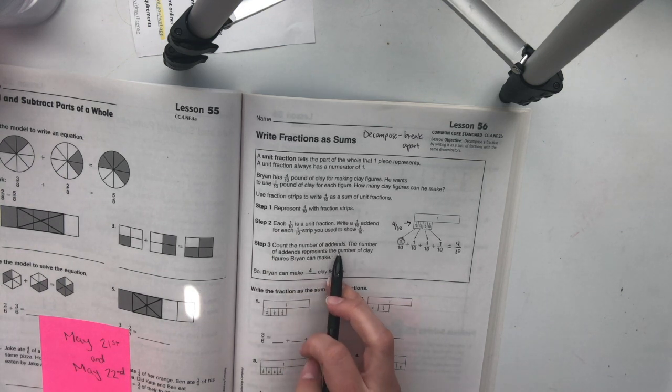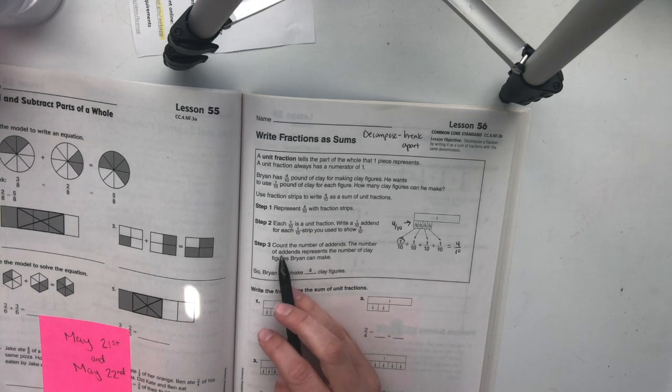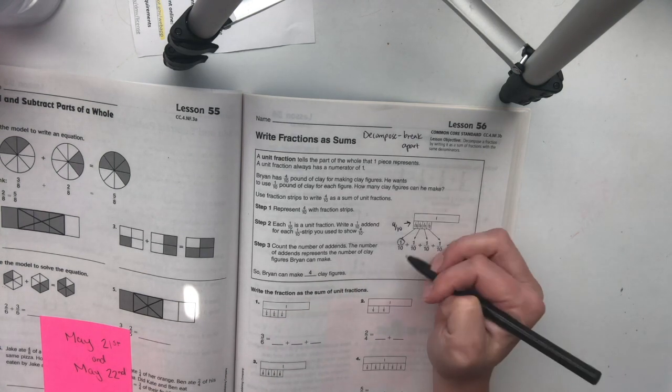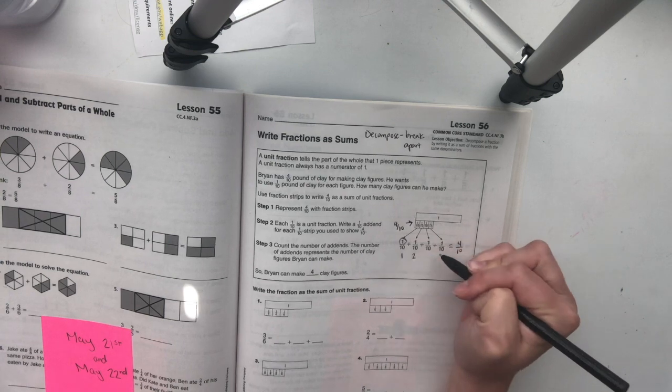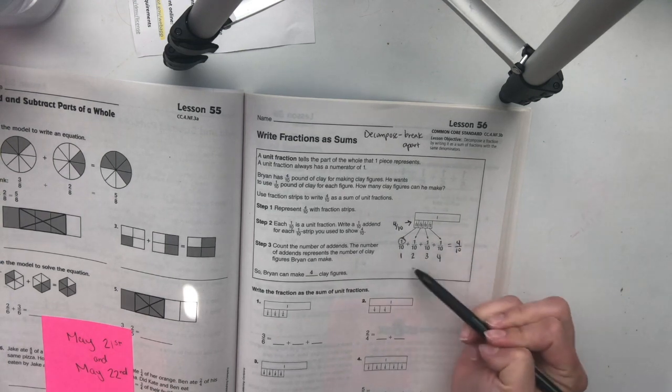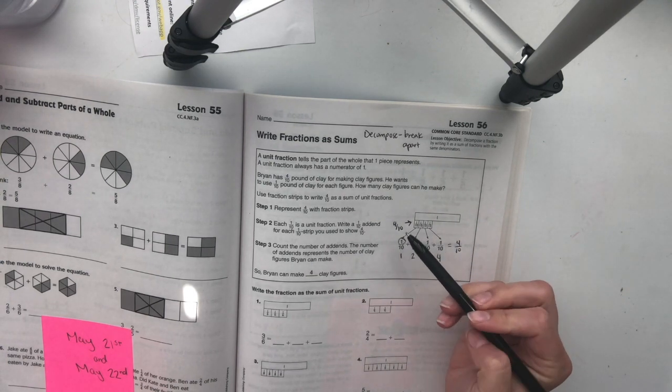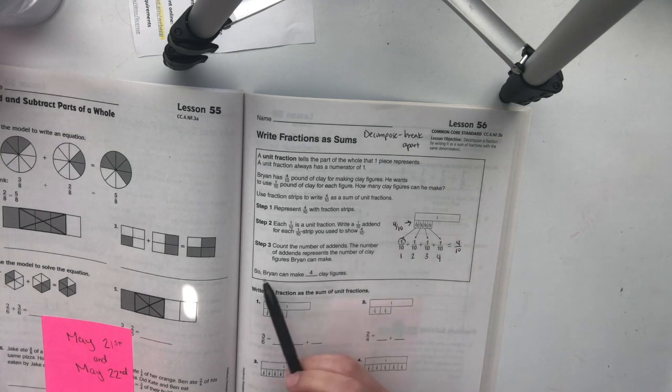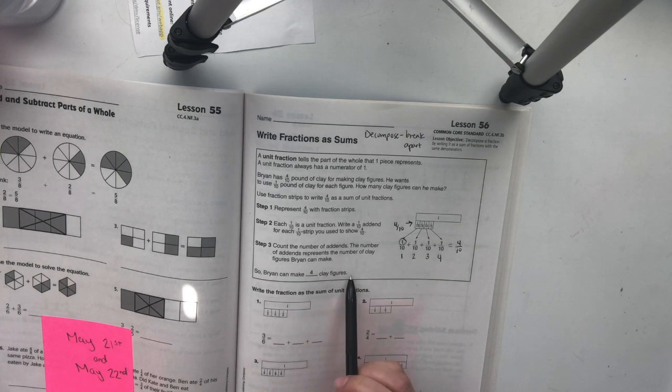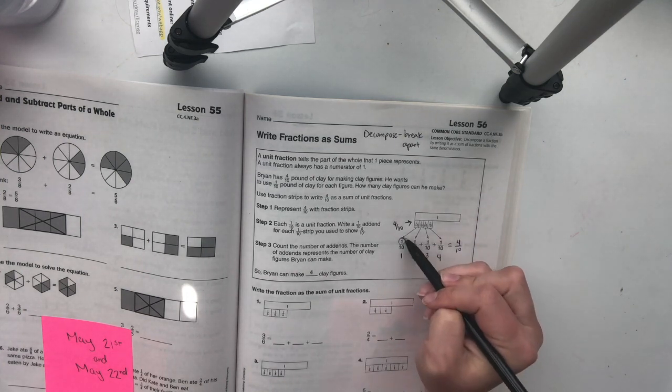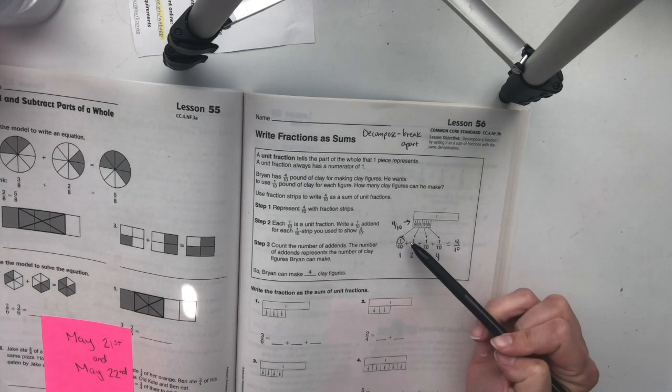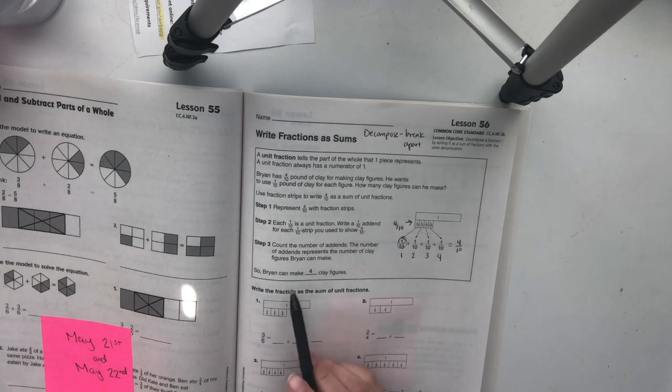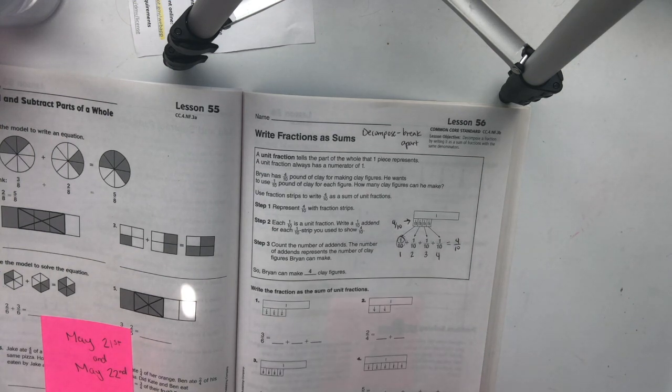So let's keep going. Step 3. Count the number of add-ins. The number of add-ins represents the number of clay figures Brian can make. So we have 1, 2, 3, 4. So how many 1 tenths can he make? He can make 4. So Brian can make 4 clay figures because each clay figure represents 1 tenth. And he has 1, 2, 3, 4, 1 tenths. So he can make 4 clay figures. Alright.